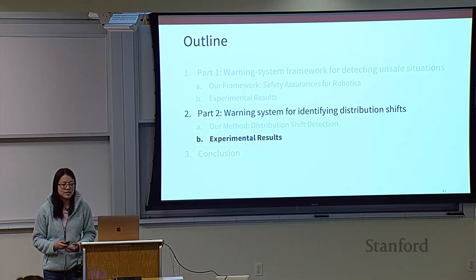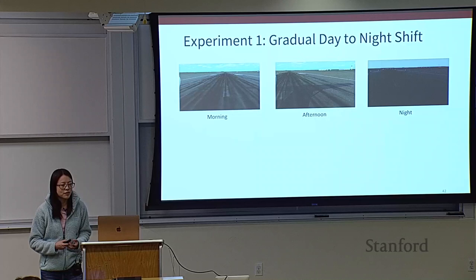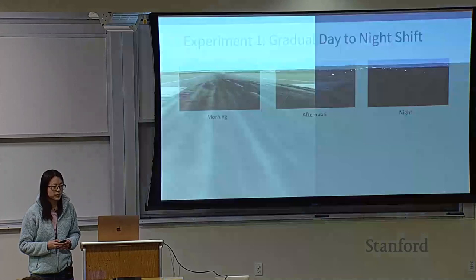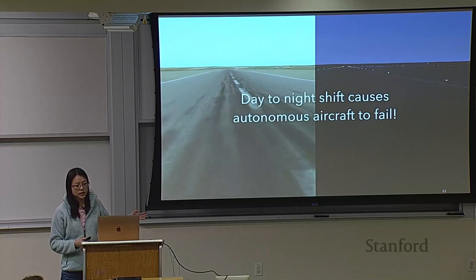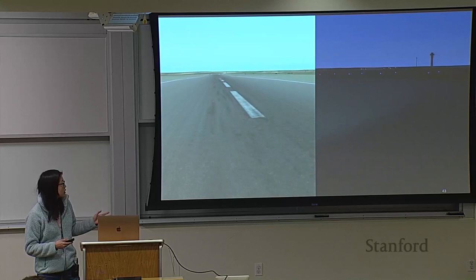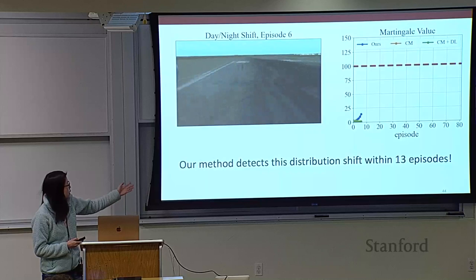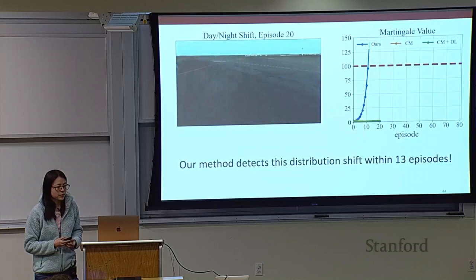To validate our method, we used image data from an autonomous aircraft in a photorealistic flight simulator that repeatedly taxis down a runway, with a gradual daytime-to-nighttime shift. This shift causes the airplane to veer off the runway. With our method, we can detect this shift within 13 episodes — and note that after 13 episodes, the sky isn't even dark yet. Meanwhile, prior methods take much longer to detect this shift.